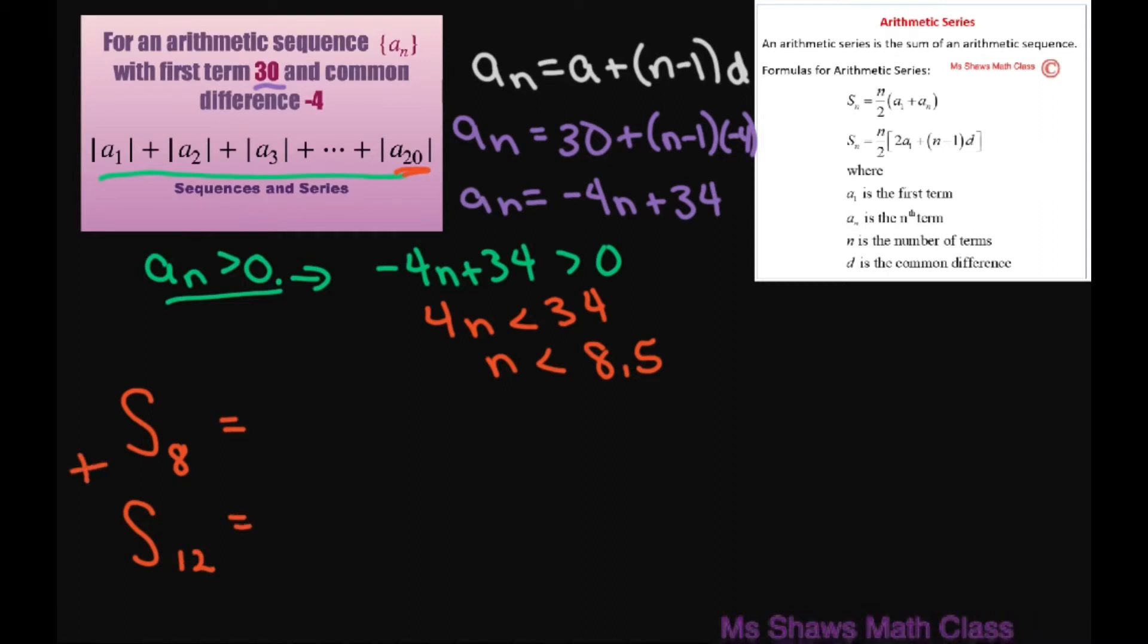Let's look at |a_9|. We'll find what the first term for that sequence is. That equals the absolute value of -4 times 9 plus 34, which equals |-2| = 2. So that's the first term for that.